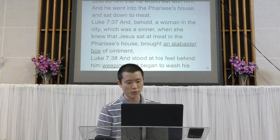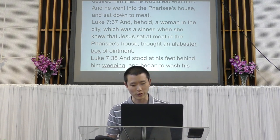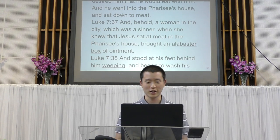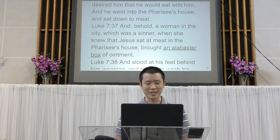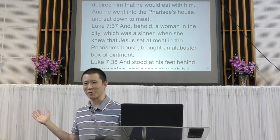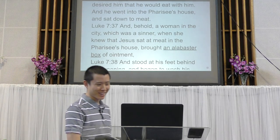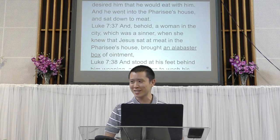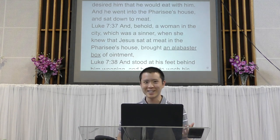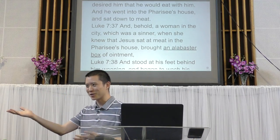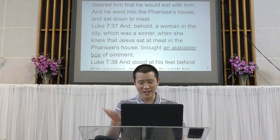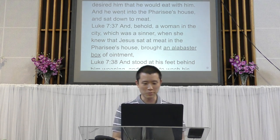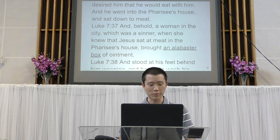We don't know what her sin was — maybe she was a fornicator, an adulterer, or a prostitute — which is why the Pharisee is saying, if you knew what she was like, you wouldn't want her touching you. It's interesting: if you invite somebody over for dinner, how come random people just walk in? Maybe it was like a close-knit community where people came and went.